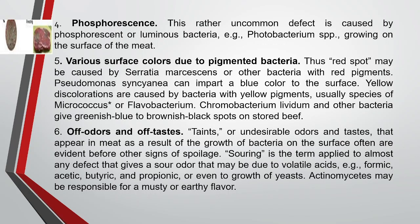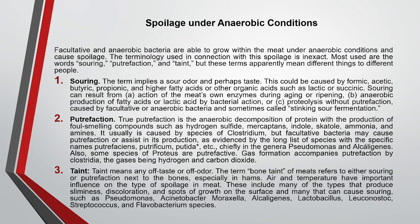Another aerobic spoilage type involves taints — undesirable odor or taste — which appear in meat as a result of bacterial growth on the surface and are often evident before other signs of spoilage. Souring is also a form of off-taste, applied to any defect that gives a sour taste. Under anaerobic conditions, souring is caused by anaerobic production of fatty acids and lactic acid by bacterial action, as well as proteolysis from the meat's own enzymes during aging or ripening.